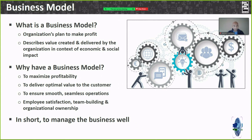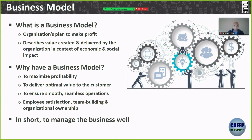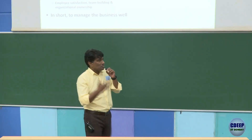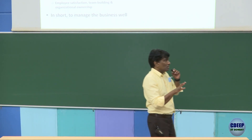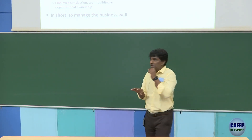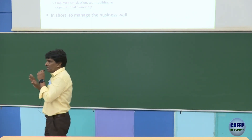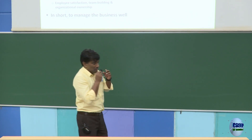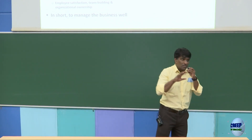A business model captures the entire business picture as much as possible of your own startup or business or idea, but it should go slightly beyond that — it should show you how to make money, how to make profits. That is a key part, because when you're operating a business you do it to make revenues, to make money and to maximize profits. Even social entrepreneurs have to generate money to survive.